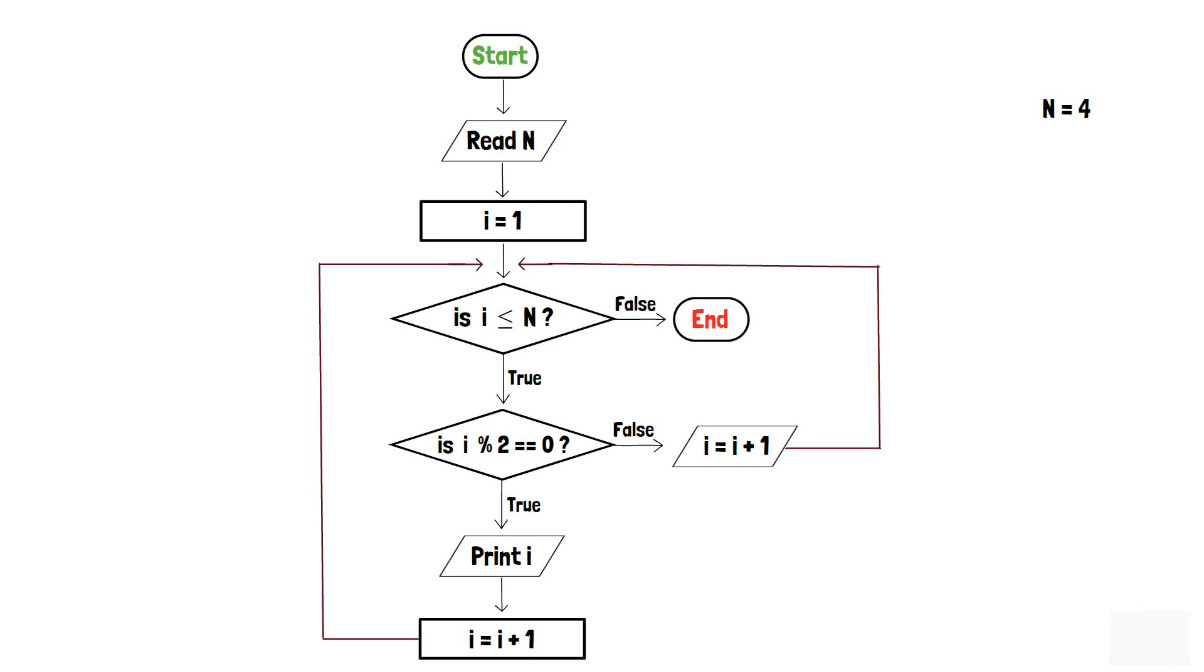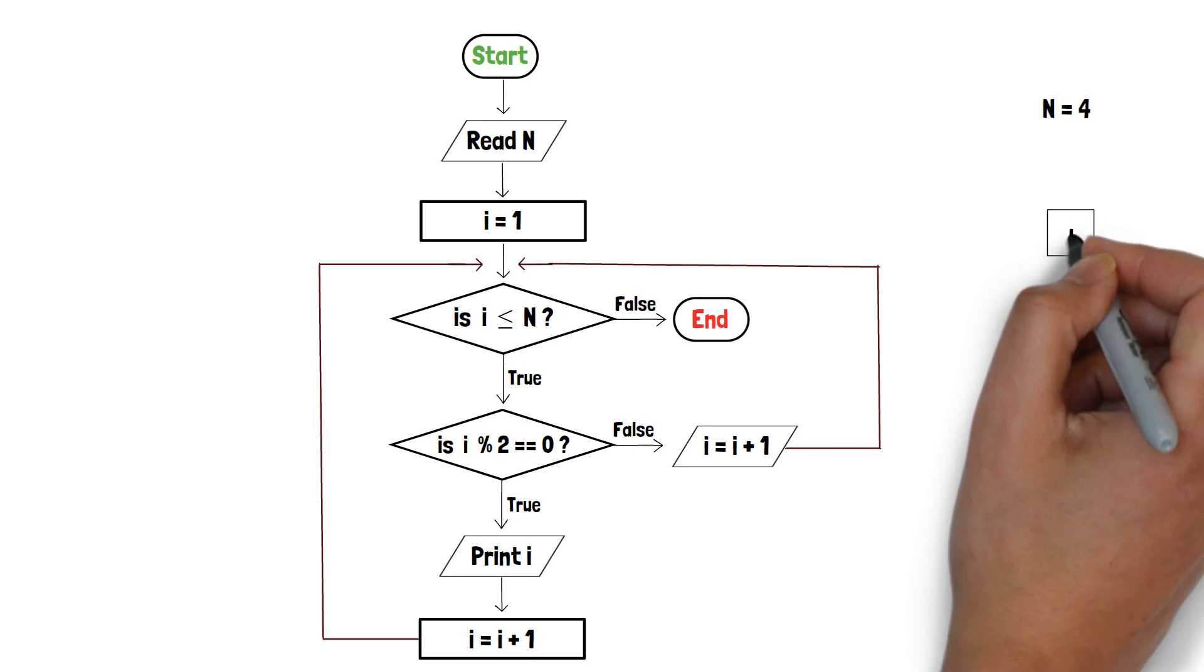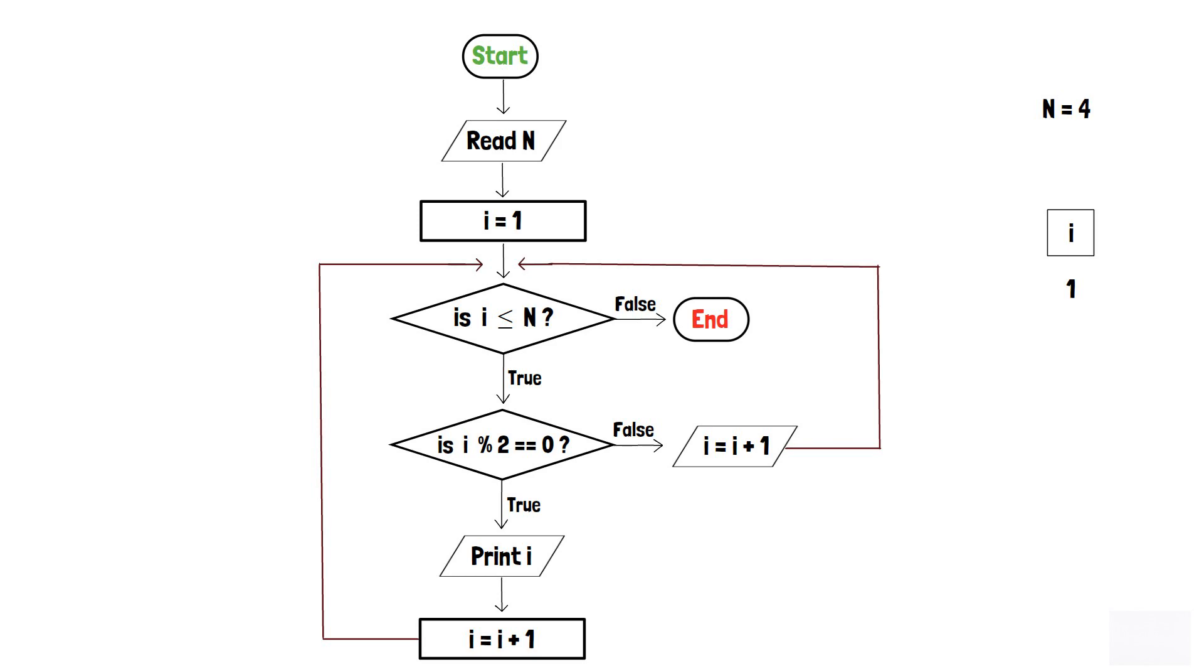Now, as at the beginning, the value of i is 1. Thus, the condition inside the first decision box is true, since 1 is less than 4. Now, i is forwarded to the second decision box.